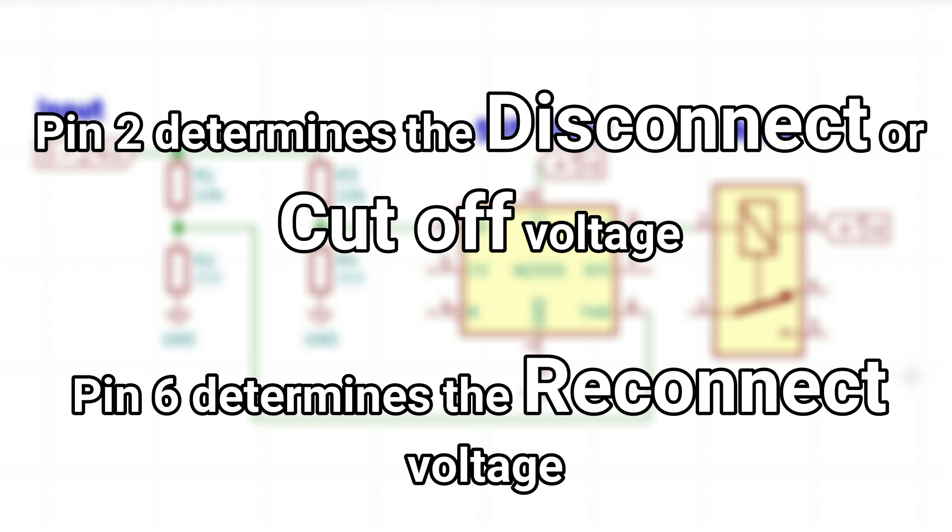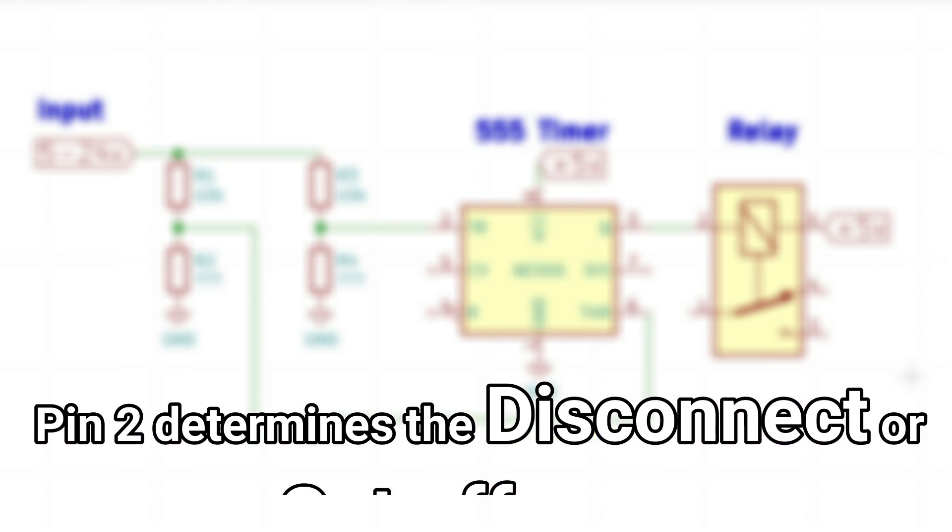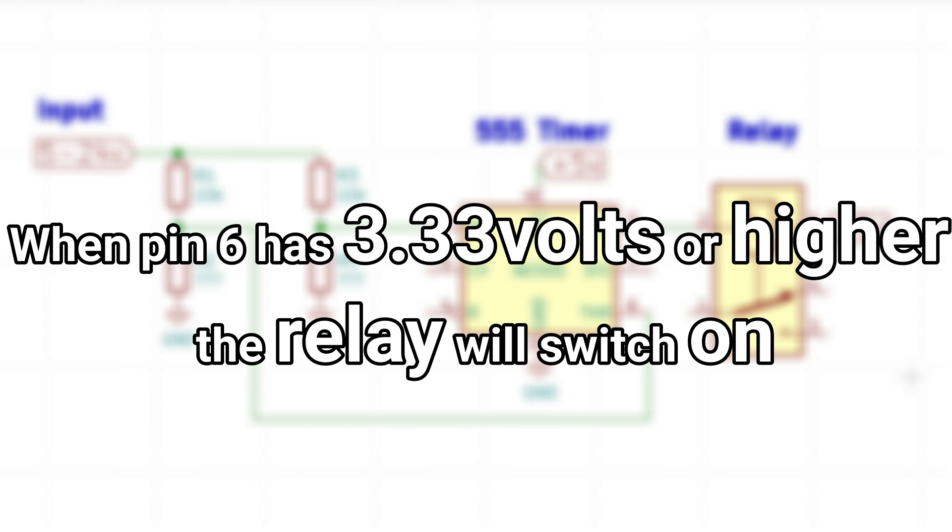Pin 2 determines the disconnect or cutoff voltage, and pin 6 determines the reconnect voltage. For the moment let's focus our attention to pin 6. When pin 6 has 3.33 volts or higher the relay will be switched on.